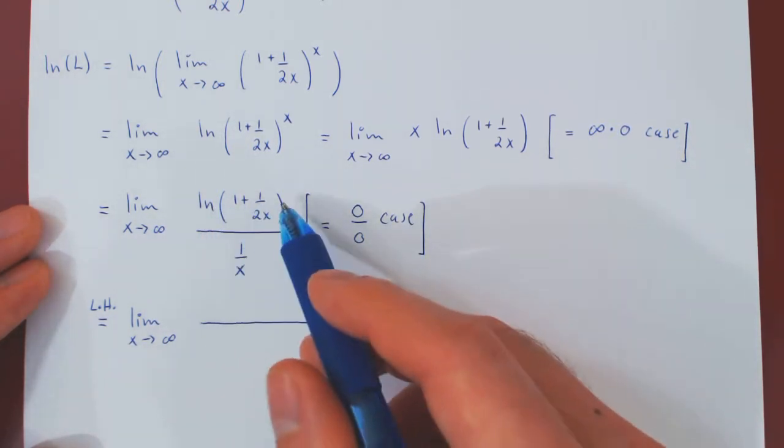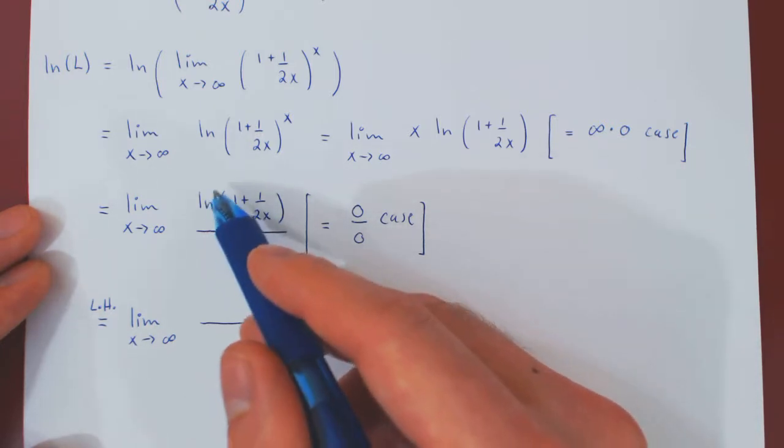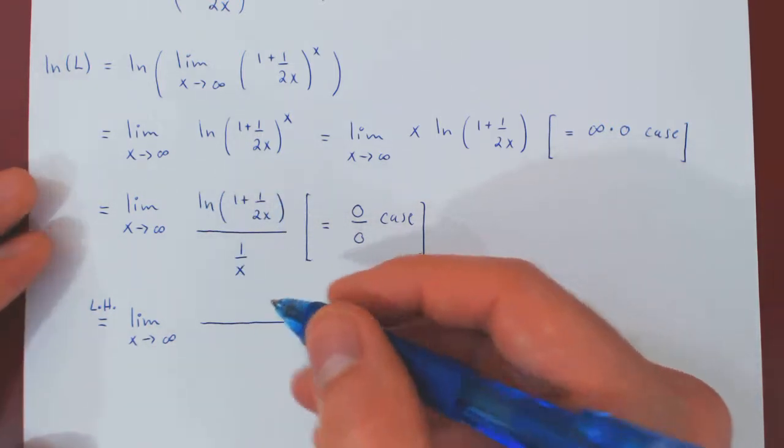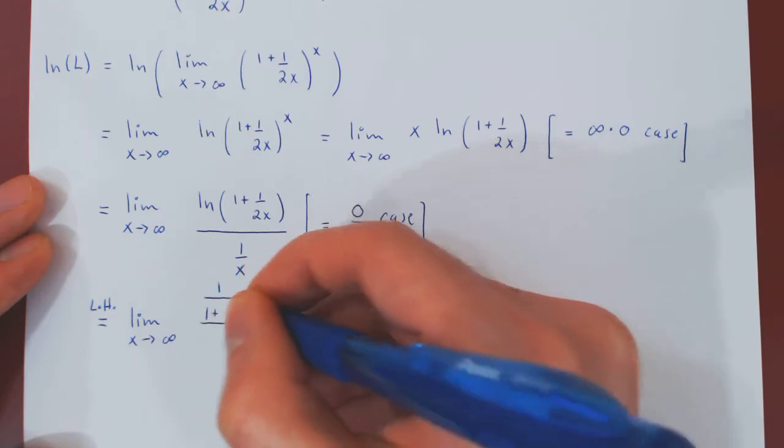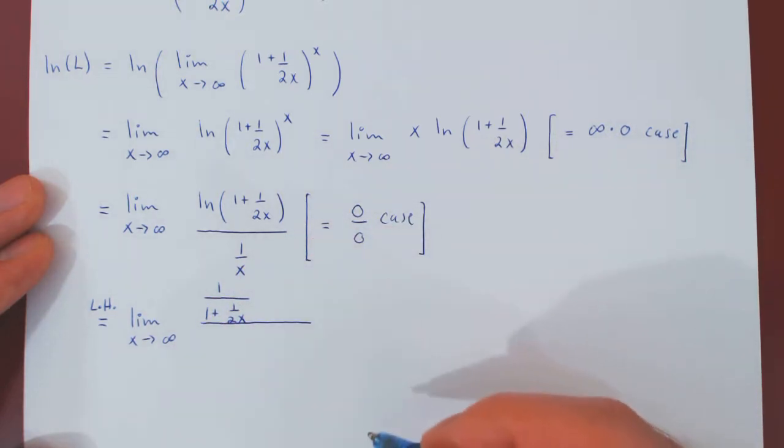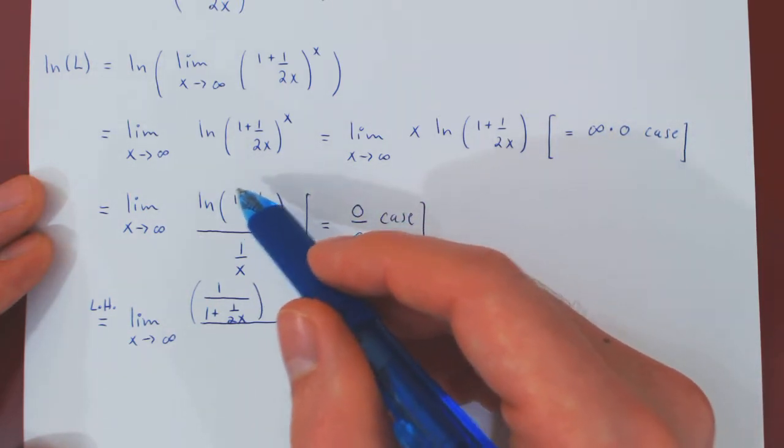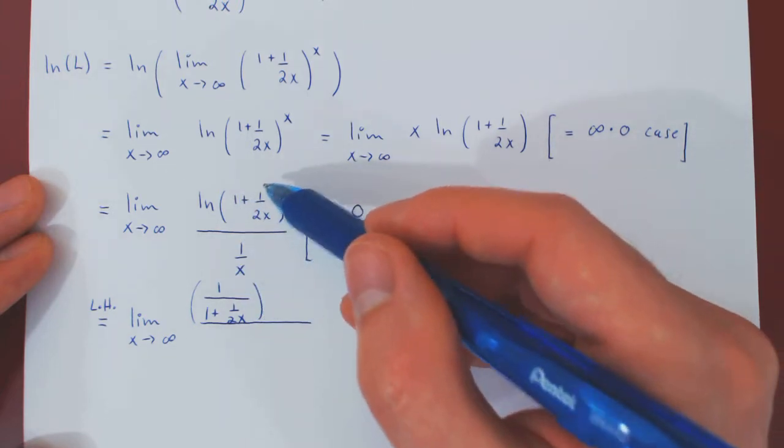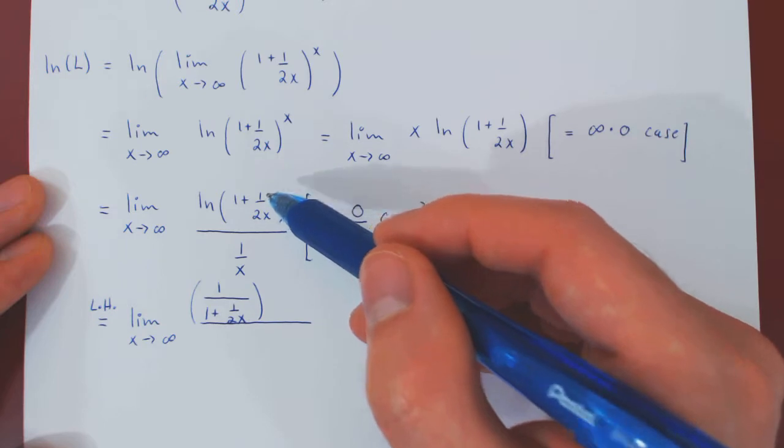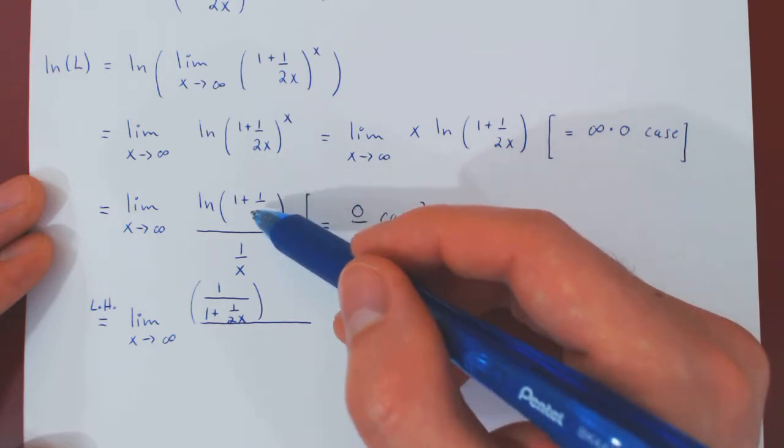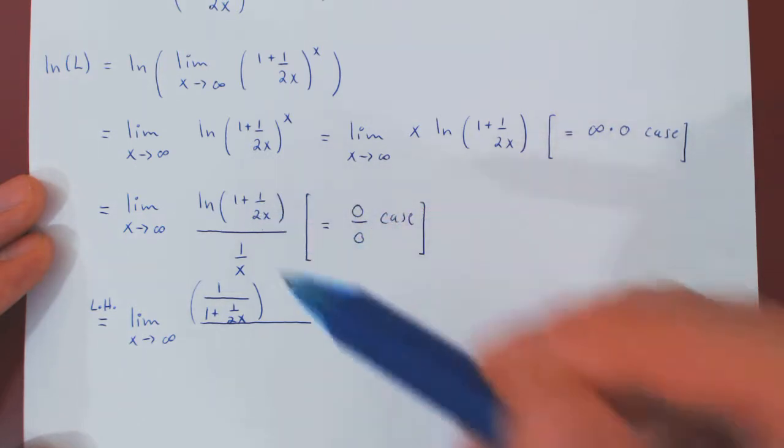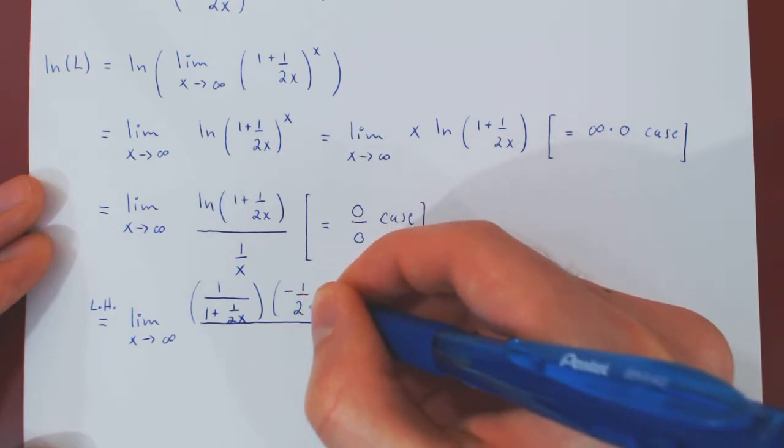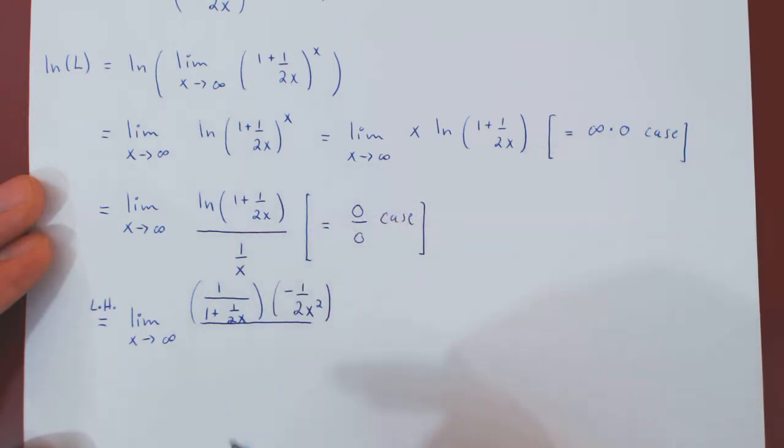So we replace the numerator by its derivative. Here we have to apply the chain rule, so the derivative of ln is 1 over the argument. So this will give us 1 over all of this, so 1 plus 1 over 2x, times the derivative of the inside. Well, the derivative of 1 is 0, so that's gone. And to differentiate 1 over 2x, bring the x up as an x to the minus 1, which will give you, from the power rule, negative 1 half x to the negative 2. And if you send this back down, you'll have negative 1 half x squared. So this completes the derivative of our numerator.